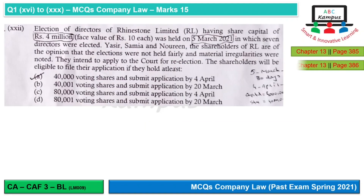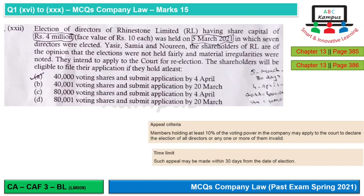Question 22: Election of directors of Rhinestone Limited — share capital of rupees 4 million, face value rupees 10 each, so total shares are 400,000 — was held on 5th March 2021, on which 7 directors were elected. Shareholders believe elections were not held fairly and wish to apply to the court for re-election. Shareholders are eligible if they hold at least 10%, which is 40,000 shares. The time limit is 30 days from 5th March, which gives 4th April. So our option would be A.